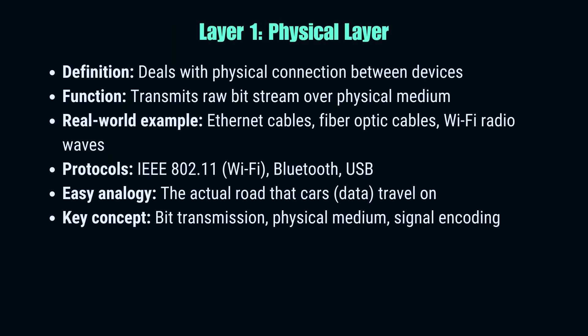The physical layer is the foundation of our networking cake. It deals with the actual physical connection between devices — its job is to transmit raw bits, those ones and zeros, over a physical medium. This could be electrical signals through an Ethernet cable, light pulses in a fiber optic cable, or radio waves for Wi-Fi. Protocols like IEEE 802.11 for Wi-Fi and Bluetooth operate at this layer. Key concepts here are bit transmission, the physical medium, and signal encoding.